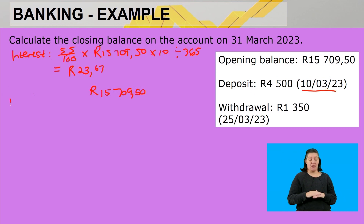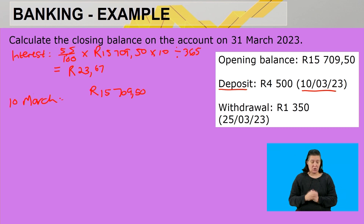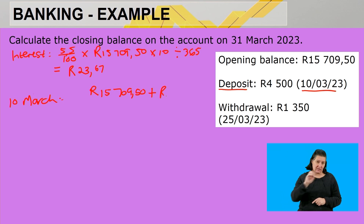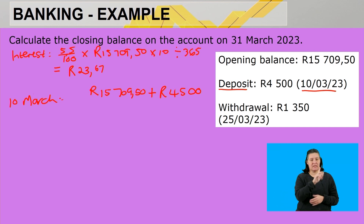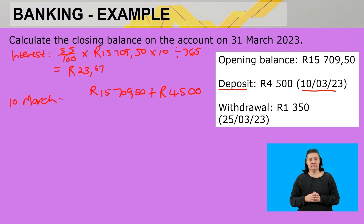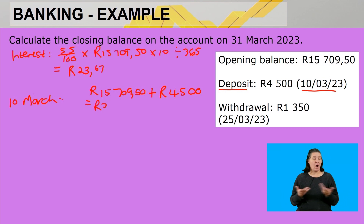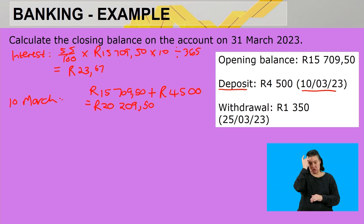On the 10th of March there is a deposit of R4,500. So the new balance is R15,709.50 plus R4,500, which gives us a new balance of twenty thousand two hundred and nine rand and fifty cents. From the 10th all the way to the 25th, that remains the balance — fifteen days in total.